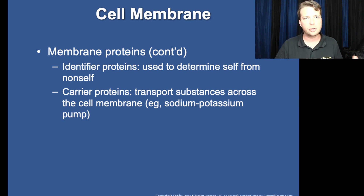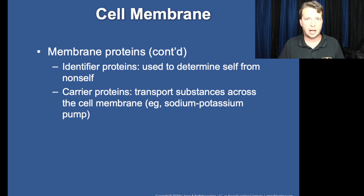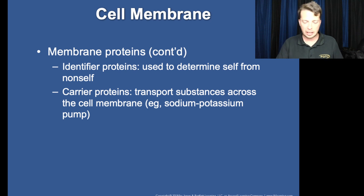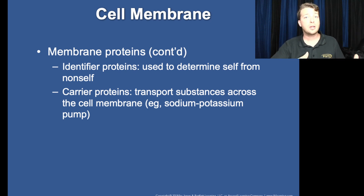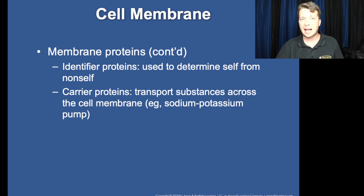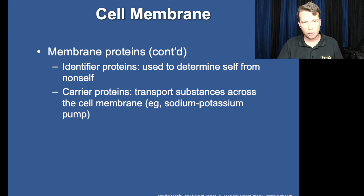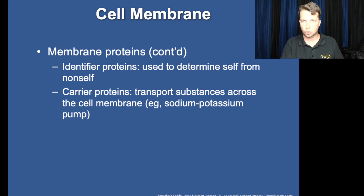This is the same reason a person who's had an organ transplant has to be on immune suppressors for the rest of their life — the organ they received, even though very similar genetically, is not exact. Those identifier proteins will be different, resulting in their body wanting to destroy it as an invader.